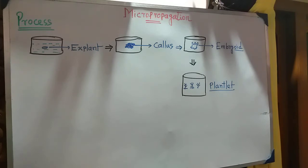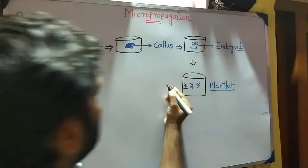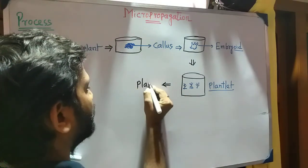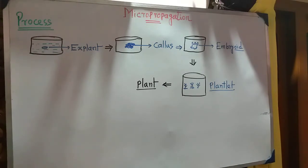This is called plantlet. Let means small, like leaflet. This is called plantlet. So the plantlet develops from the embryoid. The embryoid produces the plantlet. So this plantlet is a small part of the plant, which is a complete small plant.